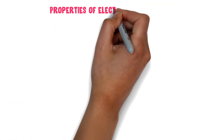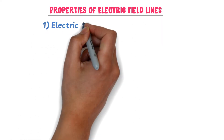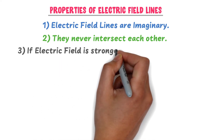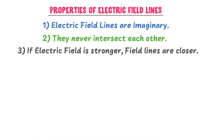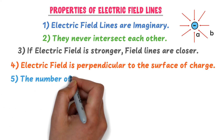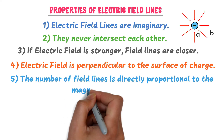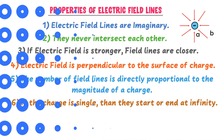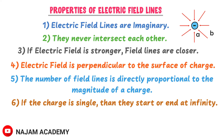Electric field lines originate outwards on positive charges and terminate inward on negative charges. The properties of electric field lines are: first, they are imaginary; second, they never intersect each other; third, when the electric field is stronger, the field lines are closer to each other — for example, at point A the lines are closer and the field is strong, while at point B the lines are farther apart and the field is weak; fourth, electric field lines are perpendicular to the surface charge; fifth, the number of field lines is directly proportional to the magnitude of the charge; sixth, if the charge is single, the field lines start or end at infinity.